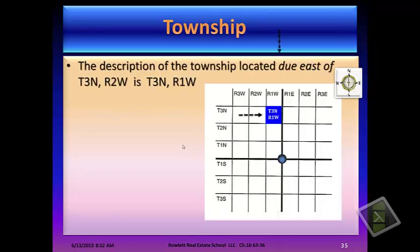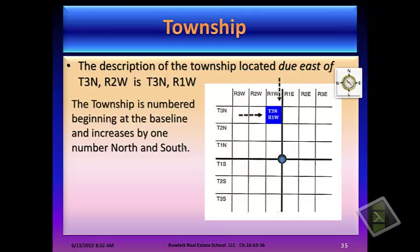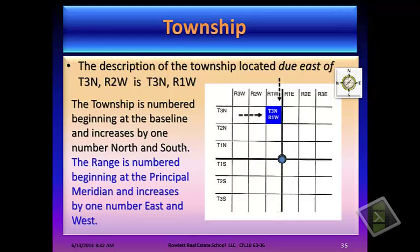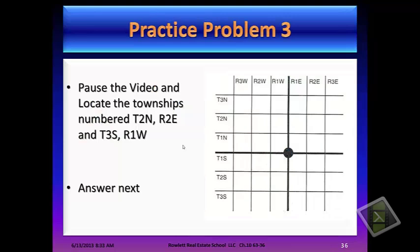The description of the township located due east of T3 north and R2W is T3 north and R1W. The township is numbered beginning at the baseline and increases by one number north and south. The range is numbered beginning at the principal meridian and increases by one number east and west. Let's pause the video and locate the townships numbered T2 north R2 east and T3 south R1 west.